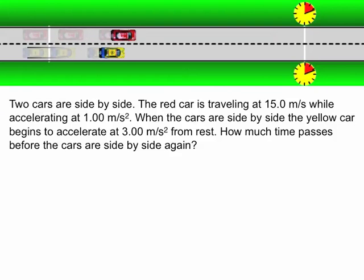Two cars are side-by-side. The red car is traveling at 15 meters per second while accelerating at 1 meter per second squared. When the cars are side-by-side, the yellow car begins to accelerate at 3 meters per second squared from rest. You can see in the diagram that the yellow car doesn't begin moving until the red car gets right next to it at the white line on the left.